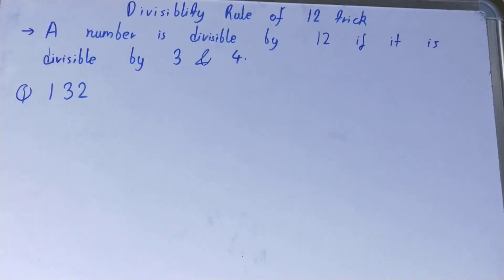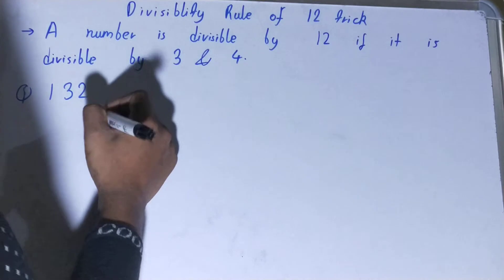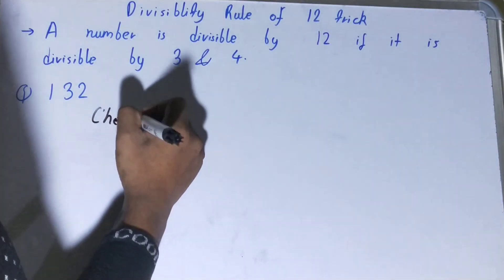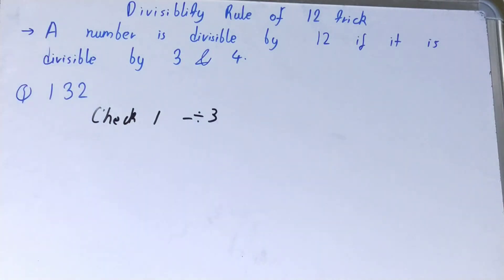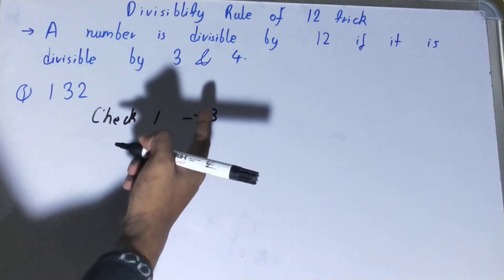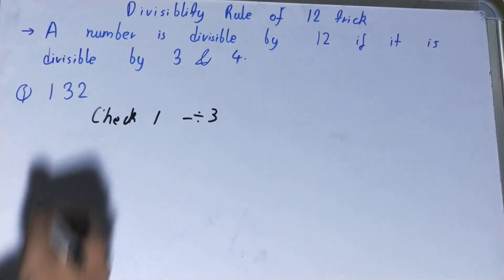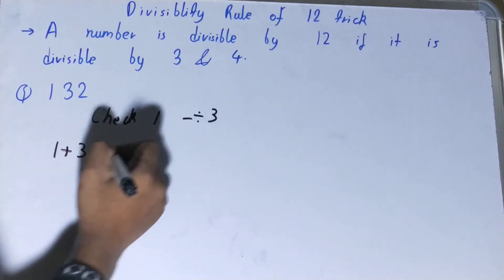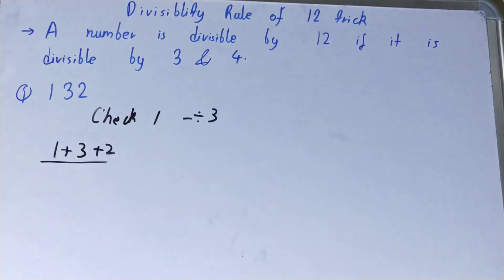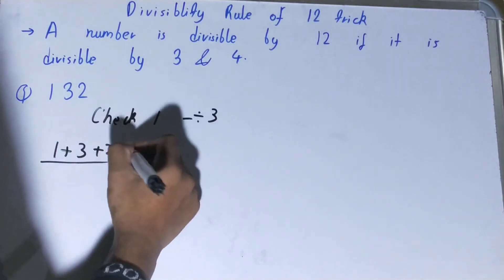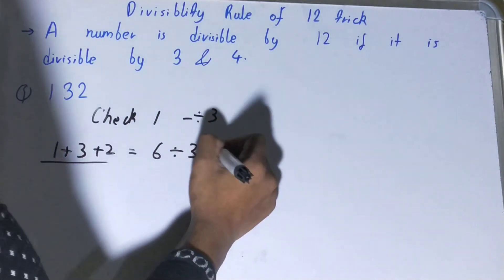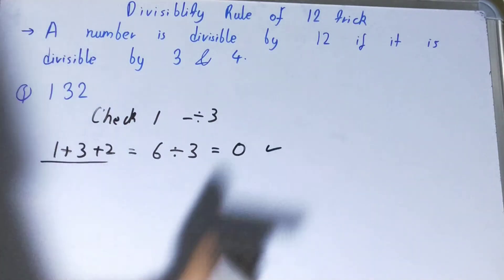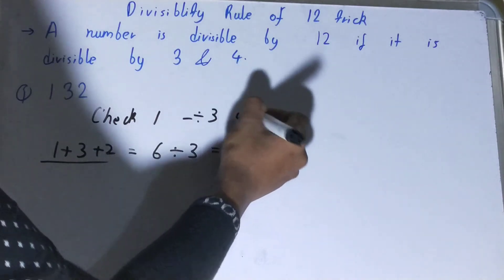Let's try to know how to check. We will perform check 1, that is we will check if it is divisible by 3 or not. For performing this check, we need to add all the digits - whether it is a 4 digit number, 5 digit number, 3 digit number, or 2 digit number, add all digits. Whatever you get, try to check whether it is divisible by 3 or not. Yes, it is divisible because we are getting the remainder is 0. So this check is passed.